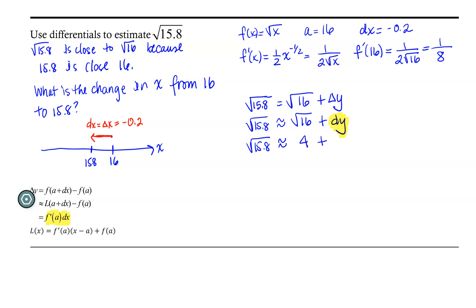Now, dy is f prime at 16 times our dx, which was negative 0.2. So our square root of 15.8 is approximately equal to 4 plus our f prime of 16 was 1 eighth times the negative 0.2. So our square root of 15.8 is approximately, now if we use a calculator, we find that this is 4 minus 0.025, which means that the square root of 15.8 using our differential is approximately 3.975.